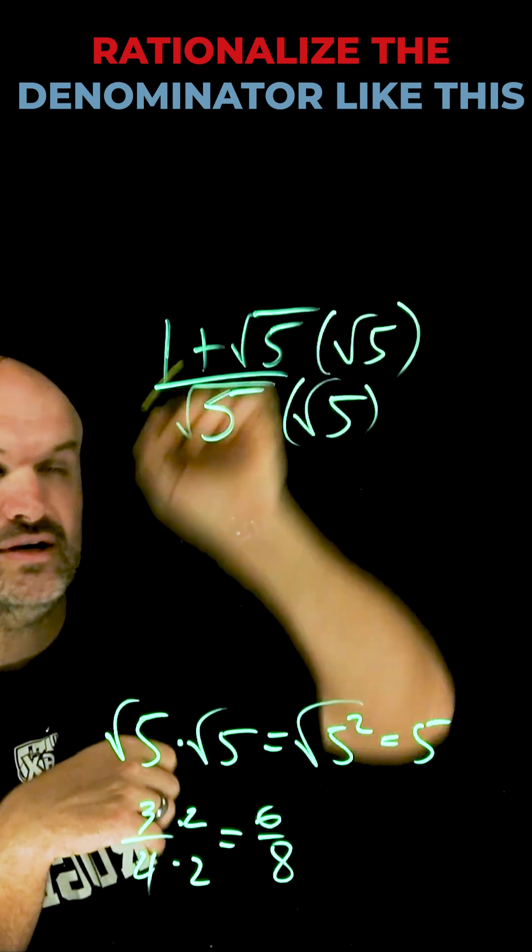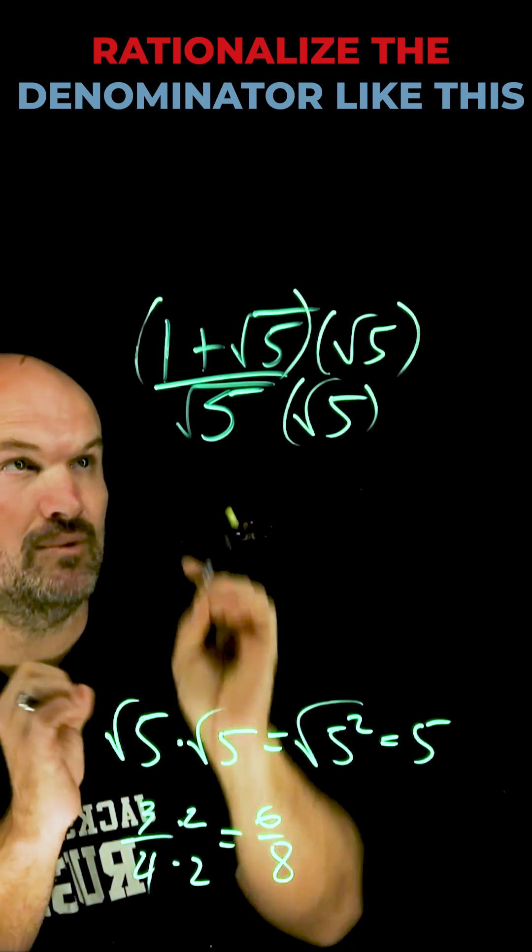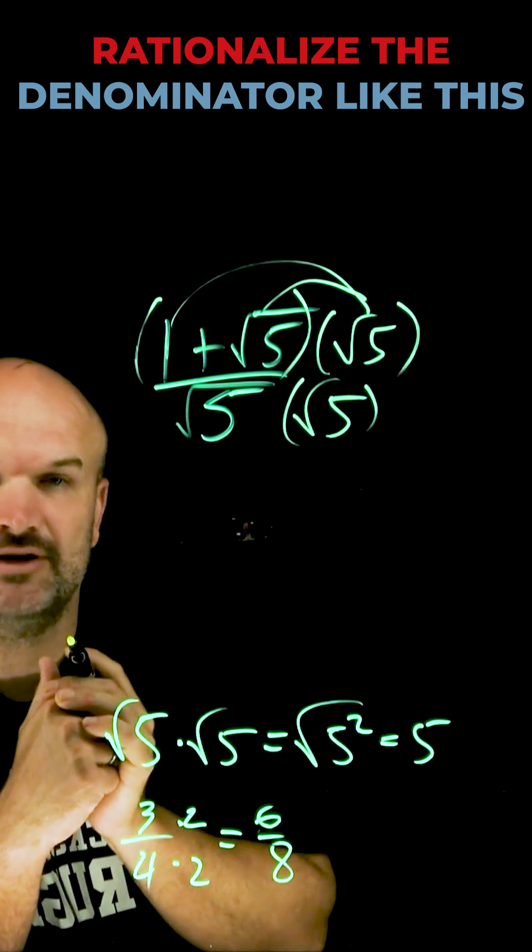So multiply the square root of five in the denominator and the numerator, and just remember this is the square root of five times one plus the square root of five. So it's important to insert these parentheses to remember you have to apply your distributive property.